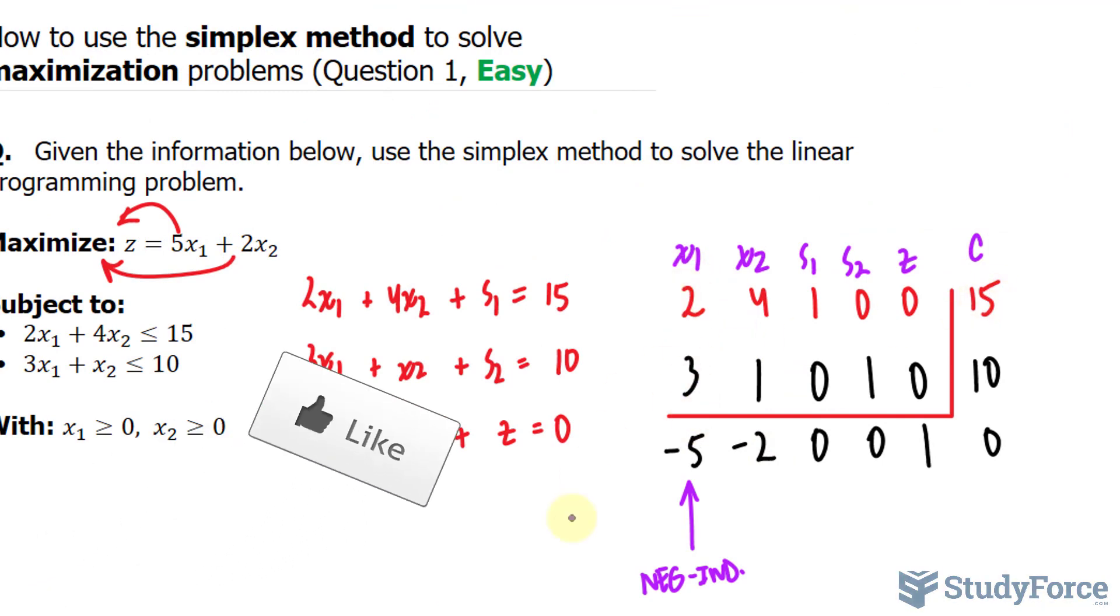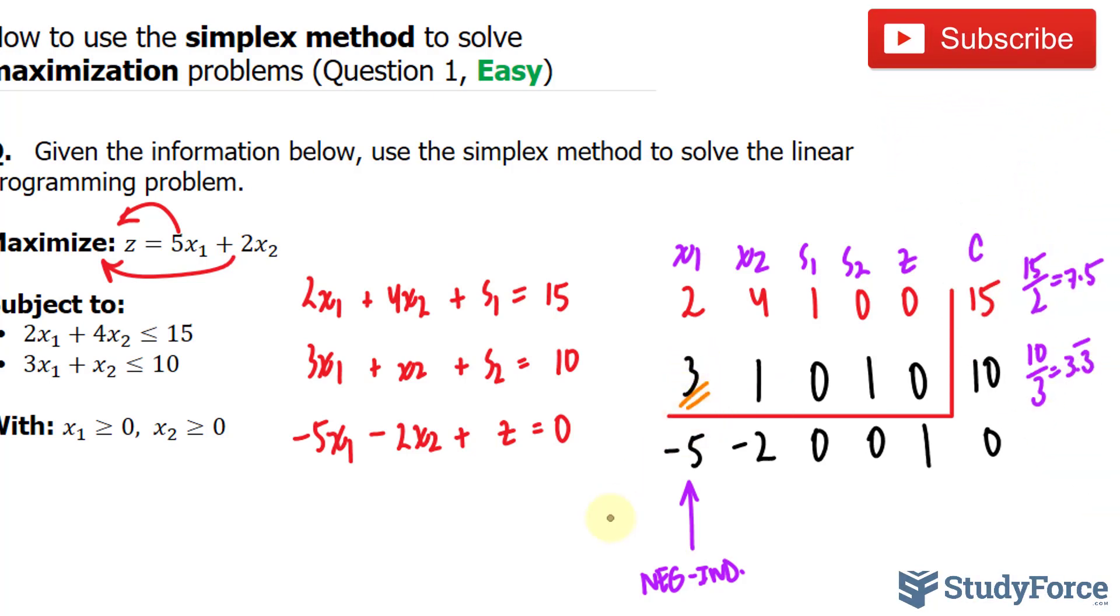Now that we found this number, we'll take this constant and divide it by the numbers within this column. So, 15 divided by 2 is equal to 7.5, and 10 divided by 3 is equal to 3 and a third, repeating. Of these two numbers, 3.3 is the smaller, and what that tells is that this number right here will remain as 3, whereas this 2 and this negative 5 will be made into zeros via matrix row operations. The number 3 is set to be the pivot, so we'll use equation 2 to change rows 1 and row 3.